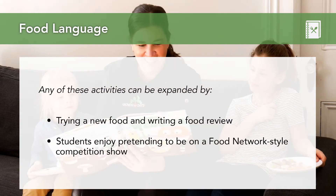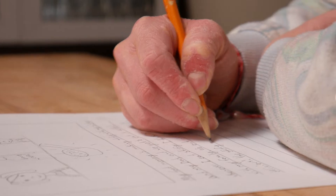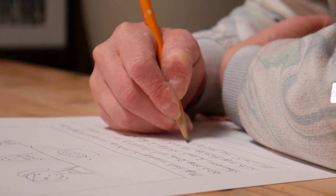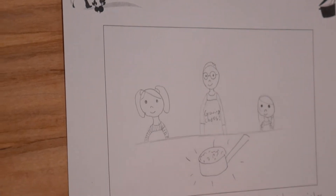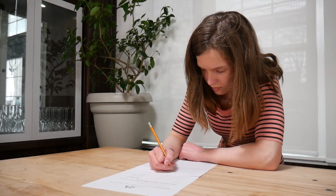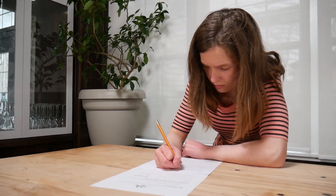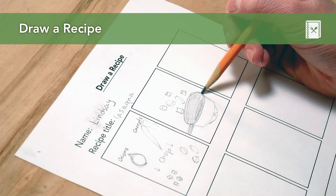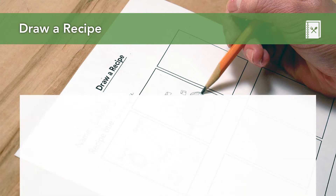Any of these exercises can be expanded upon by trying foods in class and writing collectively about the experience, which we'll explore more in the next video. For older students, you can build on the activity by asking students to visualize their favorite foods and write about a cherished memory involving food using adjectives from the list. You can develop it further by having them write a food review about an experience where they've tried new foods for the first time, or by having them draw a recipe.